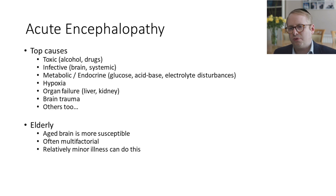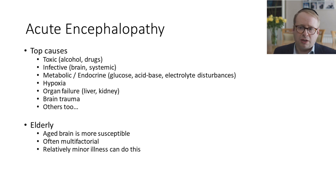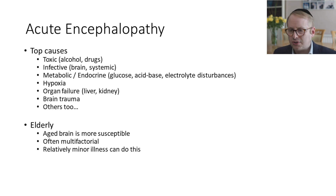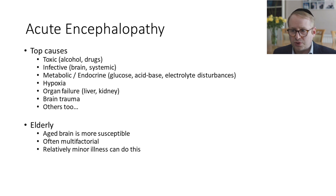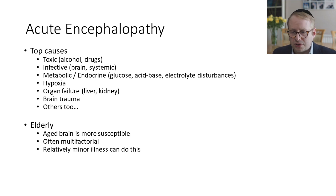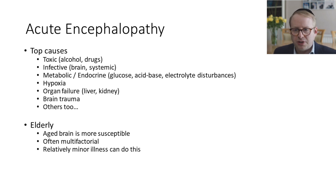In terms of causes for the acute encephalopathies, the top causes are toxic causes such as alcohol and drugs; infective causes, whether involving the brain itself such as meningitis or viral encephalitis, or systemic infection; metabolic or endocrine causes, commonly low blood sugar, acid-base disturbances, electrolyte disturbances particularly low sodiums; hypoxia, which we've seen with COVID hypoxaemias; organ failure such as liver or kidney; and brain trauma, among others.